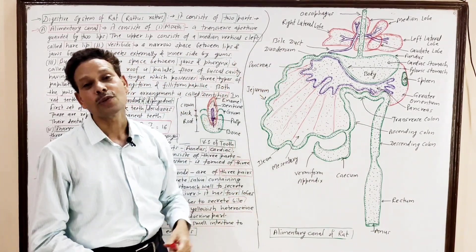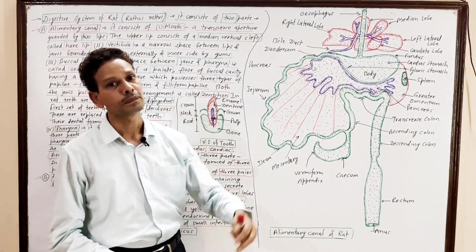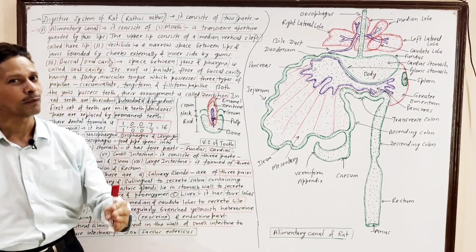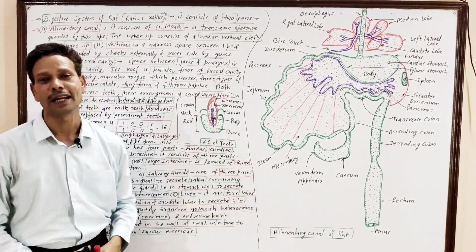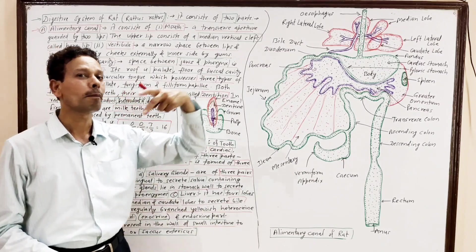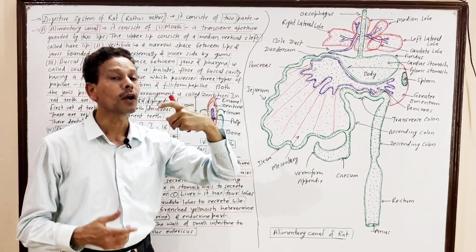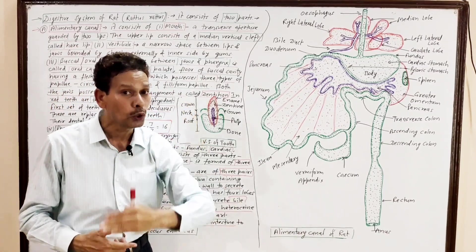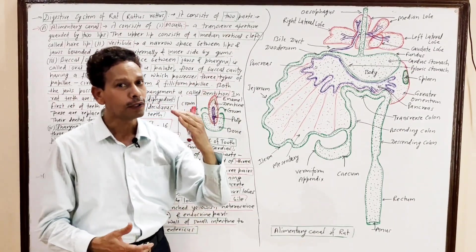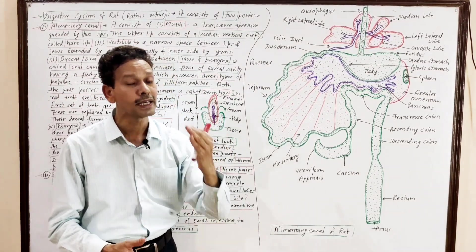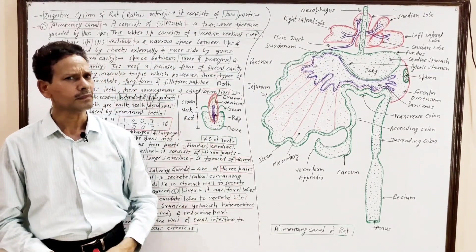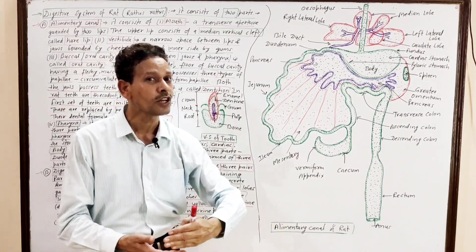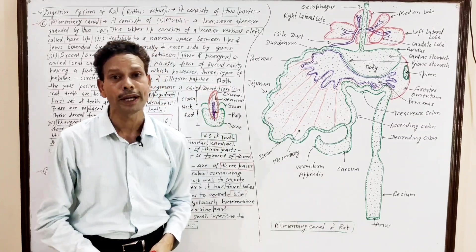The digestive glands associated with this system are, first, the salivary glands. In case of RAT, there are three pairs of salivary glands: a pair of parotid glands, a pair of submaxillary glands, and a pair of sublingual glands, which lie below the tongue. All three pairs of salivary glands secrete saliva, which contains salivary amylase, or ptyalin enzyme, for the digestion of starch and carbohydrates.